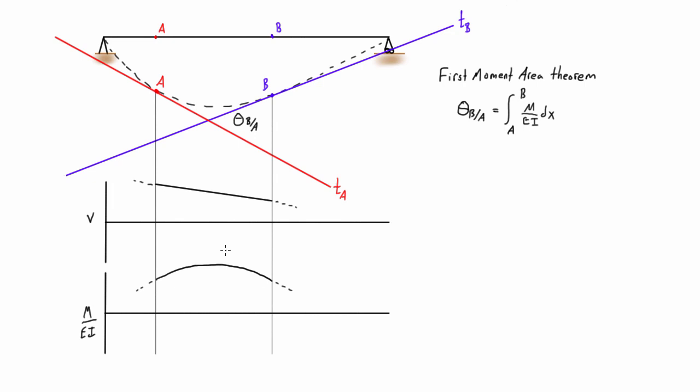So whatever this value was, say it's 100 kilonewton meters or something, divide it by EI or flexural rigidity, and divide every single point on that line, and basically it'll be the exact same shape as the bending moment diagram, but the values will be scaled down by whatever the flexural rigidity is.